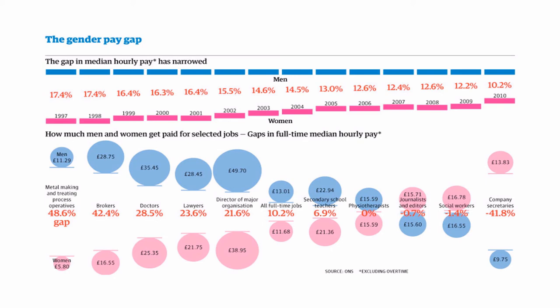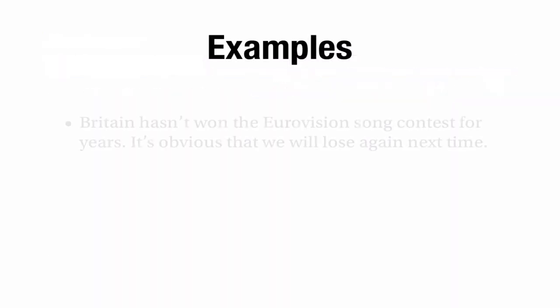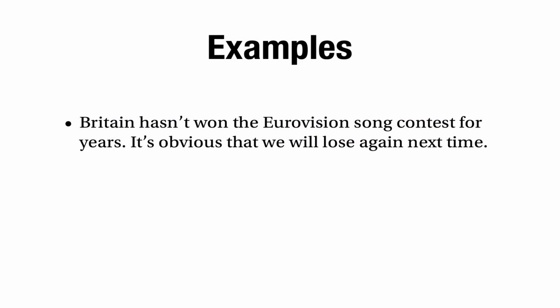But that would be making an appeal to history — assuming that because something has happened in the past, it will continue to happen in the future, and actually that's wrong. The gap between the pay of men and women might not continue to decrease. Maybe it depends on the political environment, the decisions that politicians take, or the kind of workplace environment we have. In general, just because something has happened in the past doesn't mean it's going to carry on happening. So, for example, if somebody says Britain hasn't won the Eurovision Song Contest for years so it's obvious we'll lose again next time, that argument doesn't work — just because Britain hasn't won doesn't mean it won't win this time.